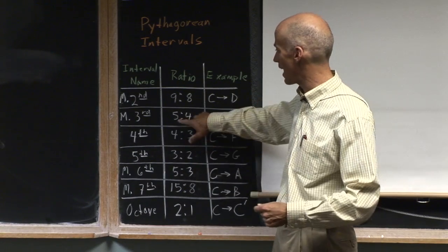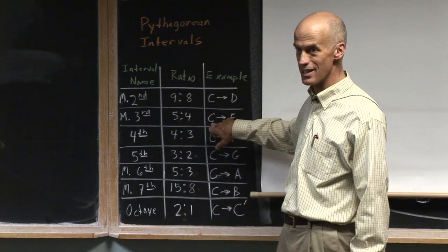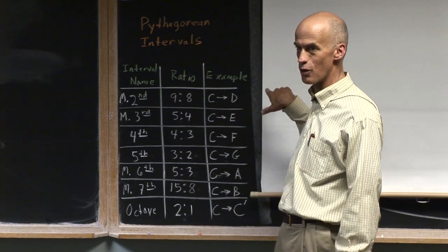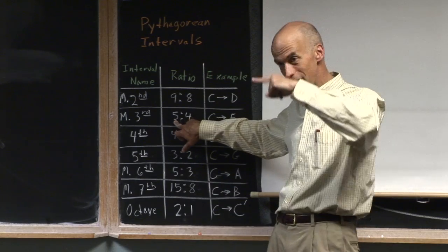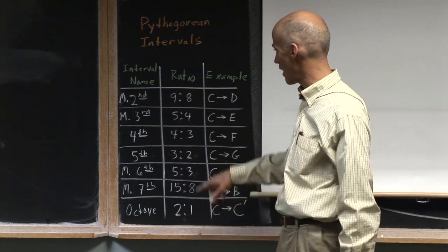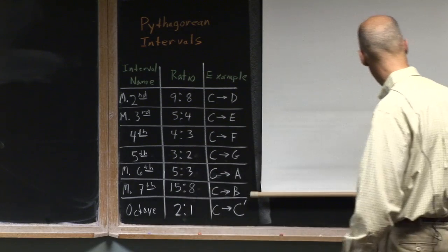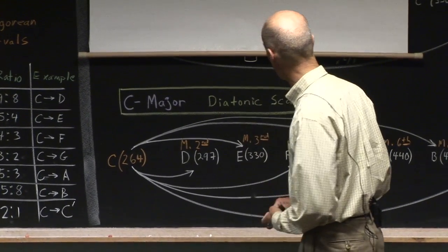Likewise, if I wanted to, I could calculate what the frequency would be. Whatever the frequency of the C is, which I'm going to use 264 in a moment, to get that E, I'm going to multiply by, well I made the string shorter, so if the length gets less, the frequency goes higher. So I'm going to multiply by five over four.